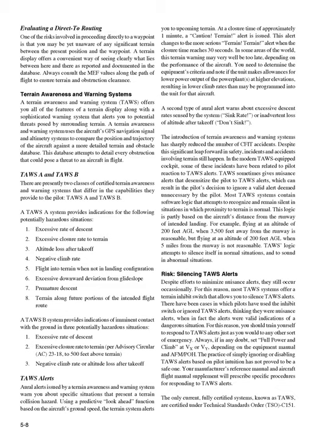A TAWS uses the aircraft's GPS navigation signal and altimetry systems to compare the position and trajectory of the aircraft against a more detailed terrain and obstacle database. This database attempts to detail every obstruction that could pose a threat to an aircraft in flight. TAWS A and TAWS B: there are presently two classes of certified terrain awareness and warning systems. A TAWS A system provides indications for: 1. Excessive rate of descent, 2. Excessive closure rate to terrain, 3. Altitude loss after takeoff, 4. Negative climb rate, 5. Flight into terrain when not in landing configuration, 6. Excessive downward deviation from glide slope, 7. Premature descent, 8. Terrain along future portions of the intended flight route. A TAWS B system provides indications of imminent contact with the ground in three situations: 1. Excessive rate of descent, 2. Excessive closure rate to terrain per AC 23-18 to 500 feet above terrain, 3. Negative climb rate or altitude loss after takeoff.